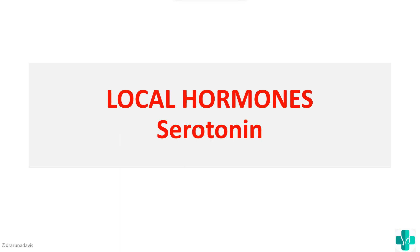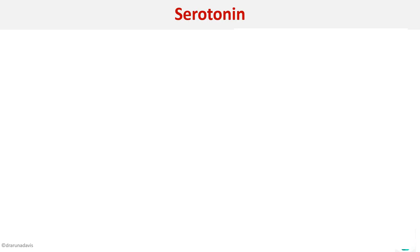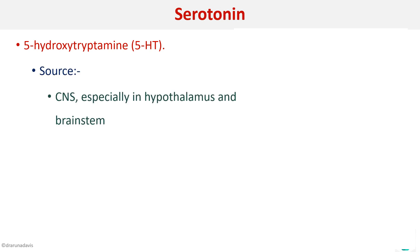In this video we begin to see about the local hormone serotonin. Serotonin is otherwise called 5-hydroxytryptamine or 5-HT. The main sources of serotonin are the CNS, especially the hypothalamus and the brain stem, the skin, platelets, basophils, and the GI tract. These are the major sites which serve as sources of serotonin.